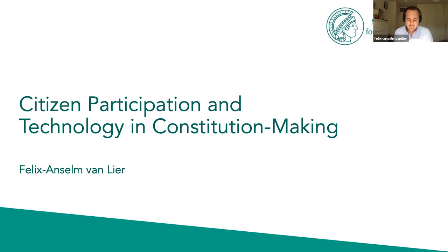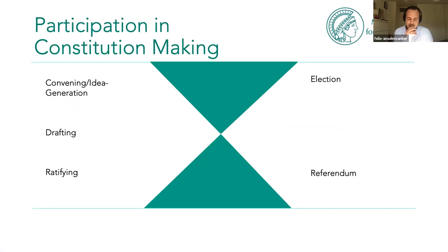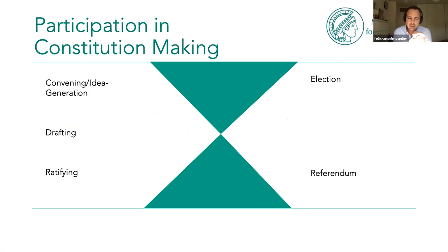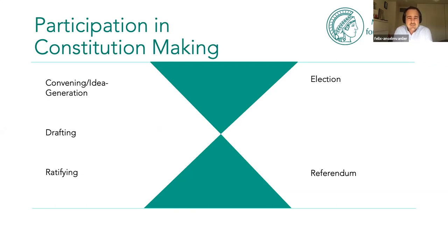Let me kick this off by showing you how participation in constitution making looked like for a long time. It looked more or less like this. Constitution making was essentially hourglass-shaped — it was a task mostly reserved to elites. Citizens may have elected some representatives at the beginning of a process in a constitution drafting assembly, or adopted the draft via referendum. While this worked for quite a long time, it does not seem to be a particularly viable solution anymore in the digital age.